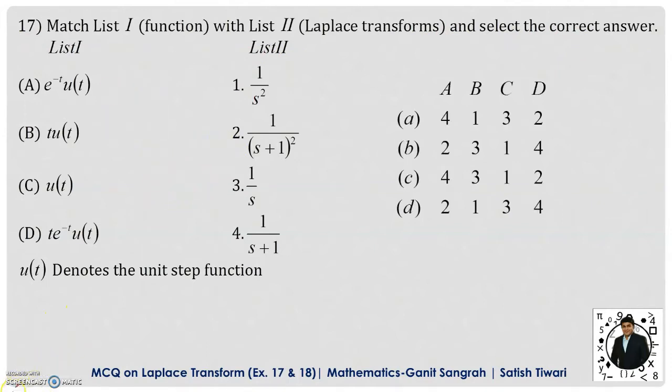Options are given to us: A, B, C, and D. Starting with the first option, A, the Laplace transformation of e to the power minus t is given by 1 upon s plus 1 by the formula, and it is multiplied with u of t, which is the unit step function. If you multiply with this one, it will not affect the answer because u of t is defined as: it takes two values, 1 and 0. 1 when t is greater than or equal to 0, and 0 when t is less than 0.